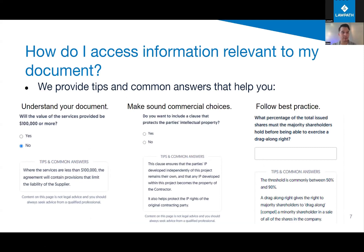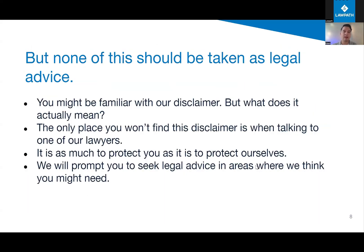We provide tips and common answers to help you fill in the fields. These help with three things: first, to understand how the document works and how your answer will affect it; second, to help you make sound commercial choices by showing what commercial effects may flow from selecting or not selecting certain clauses like an intellectual property clause; and finally, to tell you about industry best practice for certain provisions. We may also have common answers which you can click on to automatically insert that text into the field.